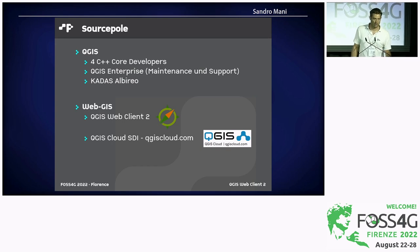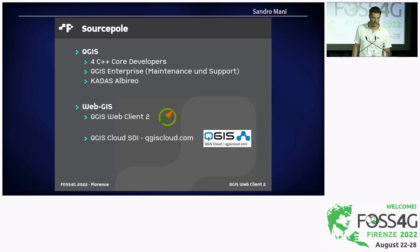A quick word about SourcePole. We are mainly a spatial GIS-based company. We develop QGIS — we are C++ core developers. We have a product called QGIS Enterprise where we provide maintenance and support for QGIS. We also have a QGIS-based application with a simplified user interface for special applications. On the WebGIS side, we have the QGIS Web Client 2, which I'm going to talk about today, and QGIS Cloud, which is a spatial data infrastructure also based on QGIS Web Client 2.